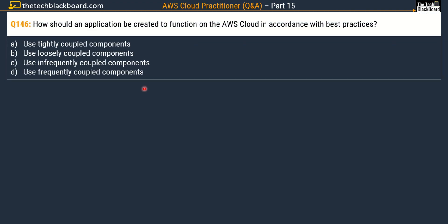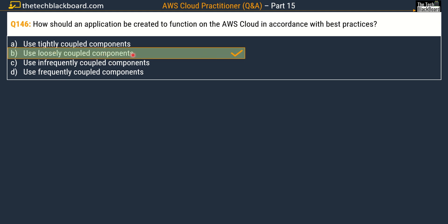Let's begin part 15 with question number 146. The question says: how should an application be created to function on the AWS Cloud in accordance with best practices? Your options are: option A, use tightly coupled components; option B, use loosely coupled components; option C, use infrequently coupled components; and option D, use frequently coupled components. The correct answer is option B, use loosely coupled components.